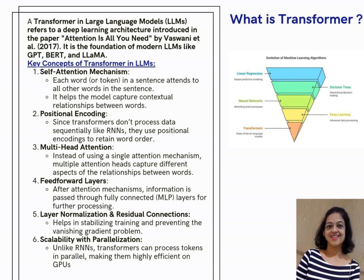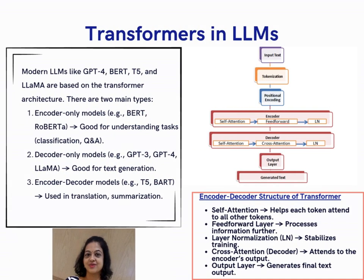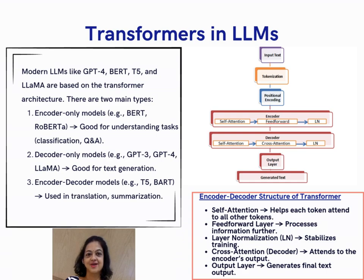Scalability with Parallelization: unlike RNNs, transformers can process tokens in parallel, making them highly efficient on GPUs. Modern LLMs like GPT-4, BERT, T5, and LLaMA are based on the transformer architecture. There are two main types: Encoder-only models (e.g., BERT, RoBERTa) — good for understanding tasks like classification and Q&A; Decoder-only models (e.g., GPT-3, GPT-4, LLaMA) — good for text generation; and Encoder-decoder models (e.g., T5, BART) — used in translation and summarization.